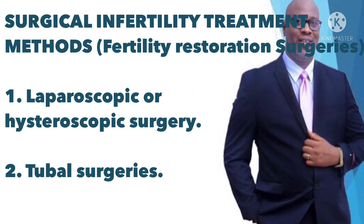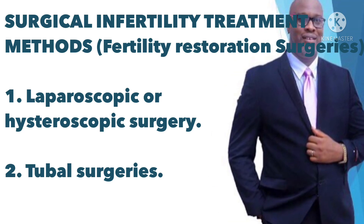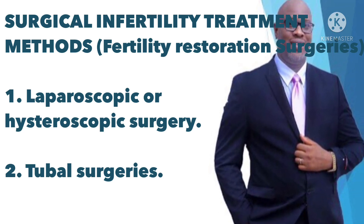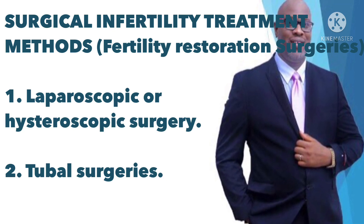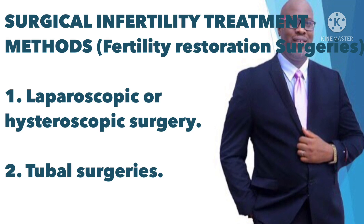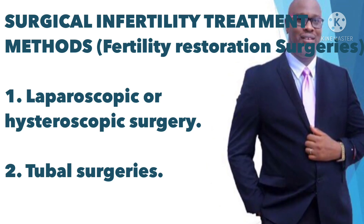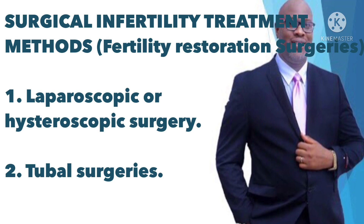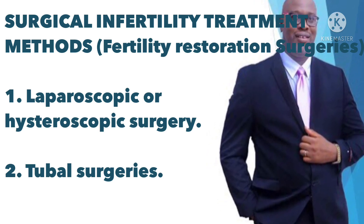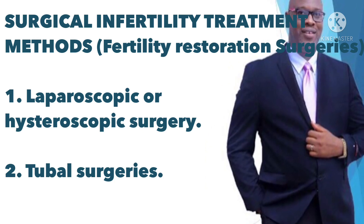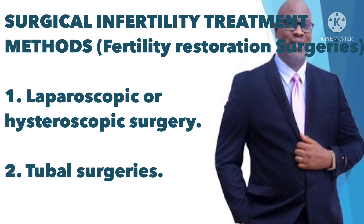Surgical infertility treatment methods. Several surgical procedures can correct fertility problems or otherwise improve female fertility. However, surgical treatments for fertility are rare these days due to the success of other treatments. They include: 1) Laparoscopic or hysteroscopic surgery — these surgeries can remove or correct abnormalities and help improve the chances of women getting pregnant. Surgery might involve correcting an abnormal uterine shape, removing pelvic or uterine adhesions, removing endometrial polyps, and some types of fibroids that misshape the uterine cavity. 2) Tubal surgeries — if the fallopian tubes are blocked or filled with fluid (hydrosalpinx), the doctor may recommend laparoscopic surgery to remove adhesions, dilate a tube or create a new tubal opening.